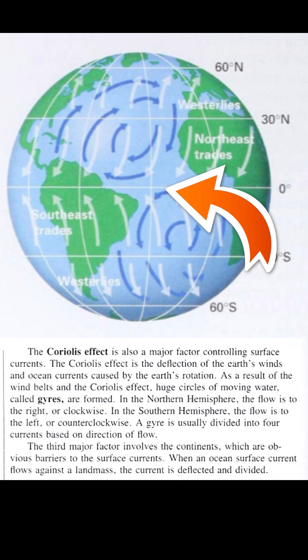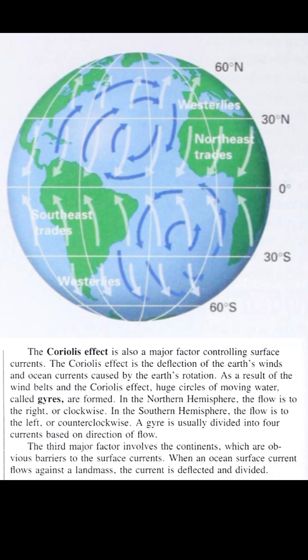A gyre is usually divided into four currents, based on the direction of flow. The big claim the book is making here is that the spin of the earth causes both wind and water to move. Do you agree with that? Why or why not?